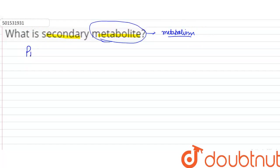One is primary metabolites, which are directly involved in normal functioning, growth, and reproduction.